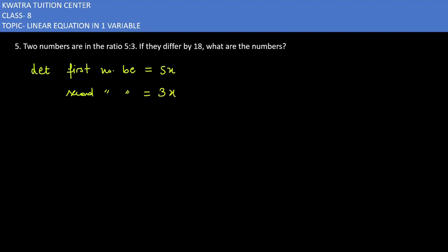And they differ means that if they are different then how much will be 18. 5x minus 3x is equal to 18 because we have said that we have two numbers 5x and 3x and their difference is equal to 18. So 5x minus 3x is nothing but 2x which is equal to 18.